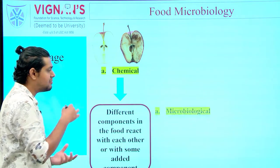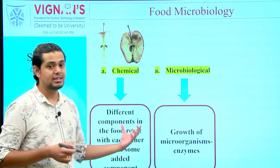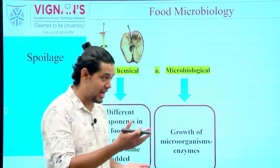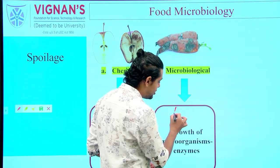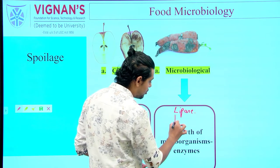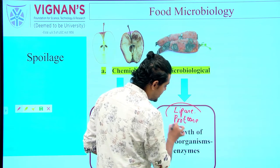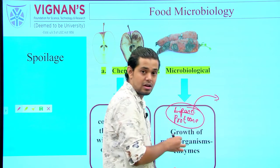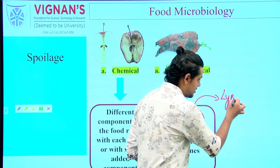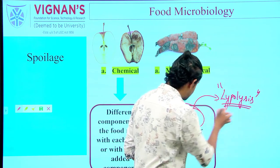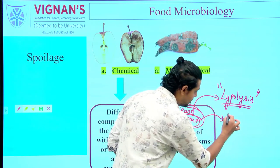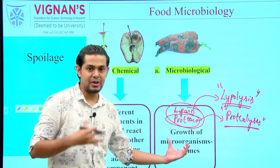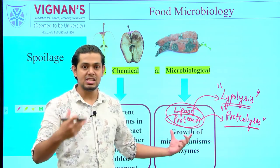Microbiological or biological change is brought about by the growth of microorganisms. Microorganisms have the ability to produce a variety of enzymes; for example, they can produce lipase and protease. Lipase causes lipolysis — the breakage of fats — while protease causes proteolysis, the breakdown of proteins.